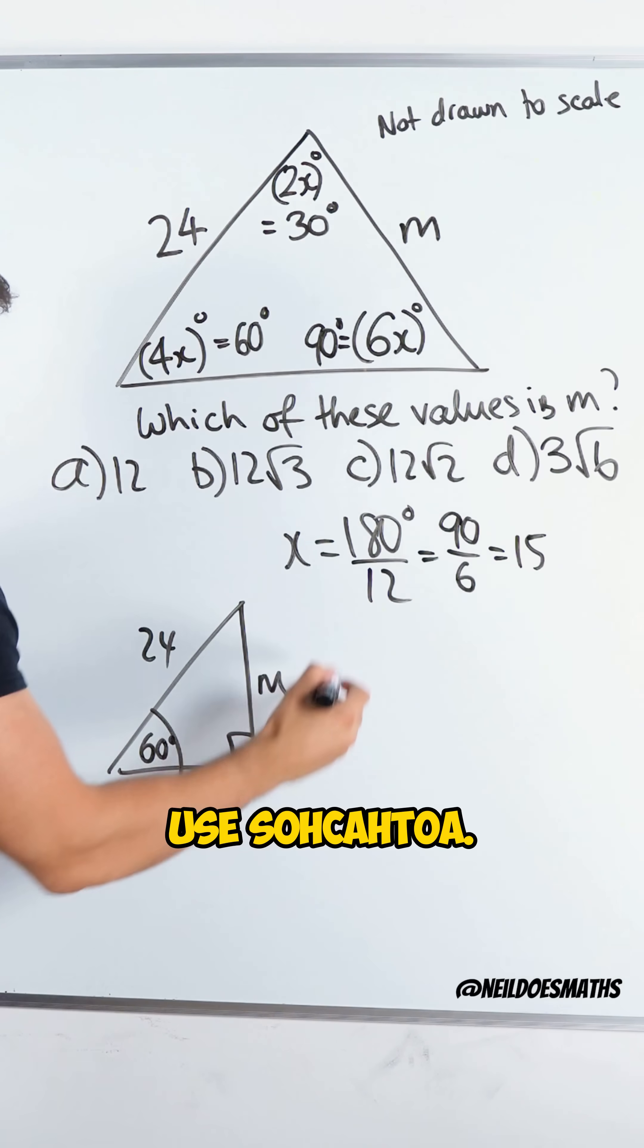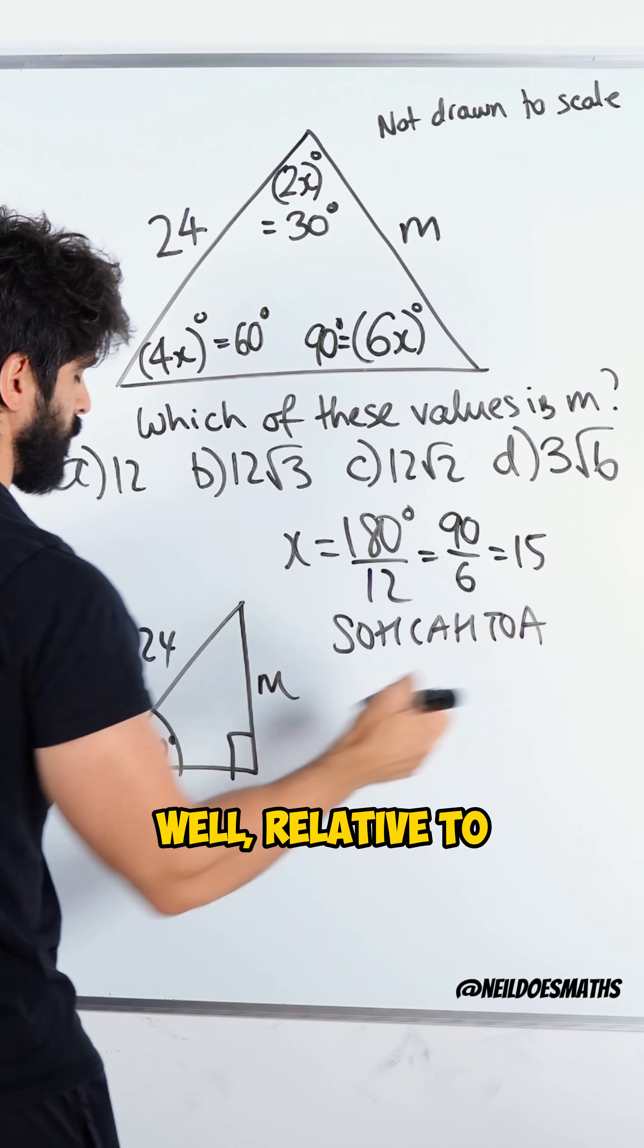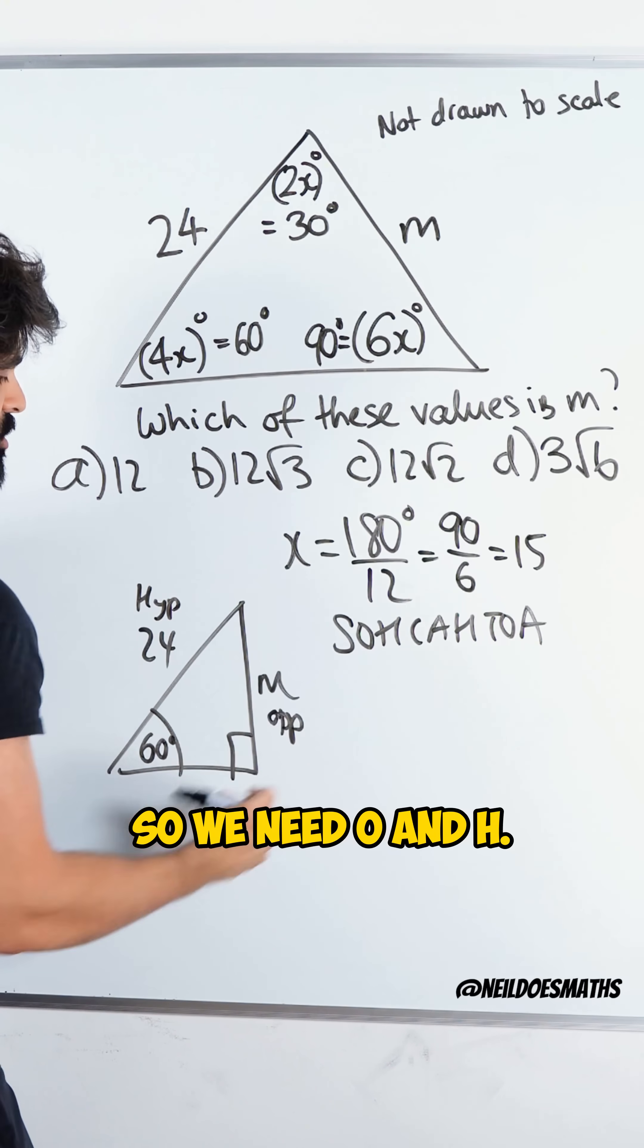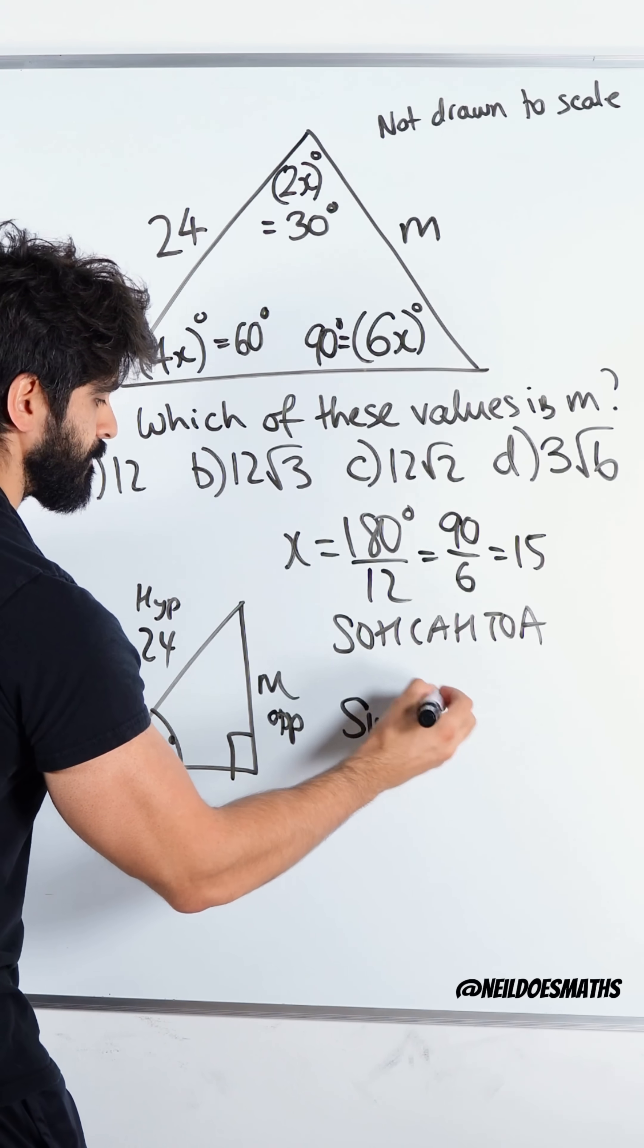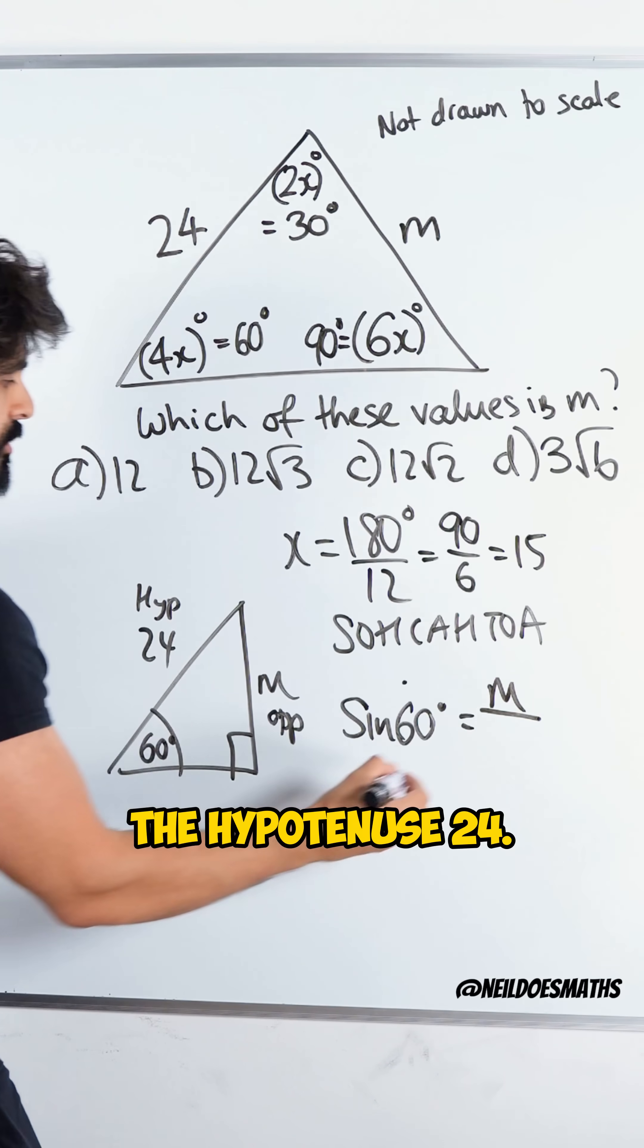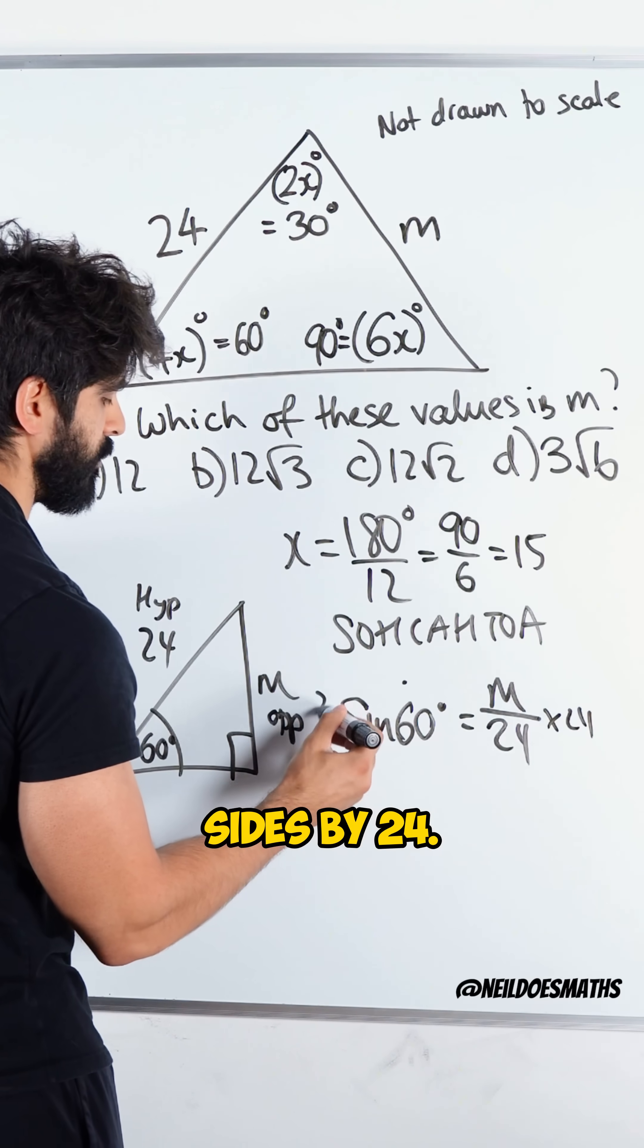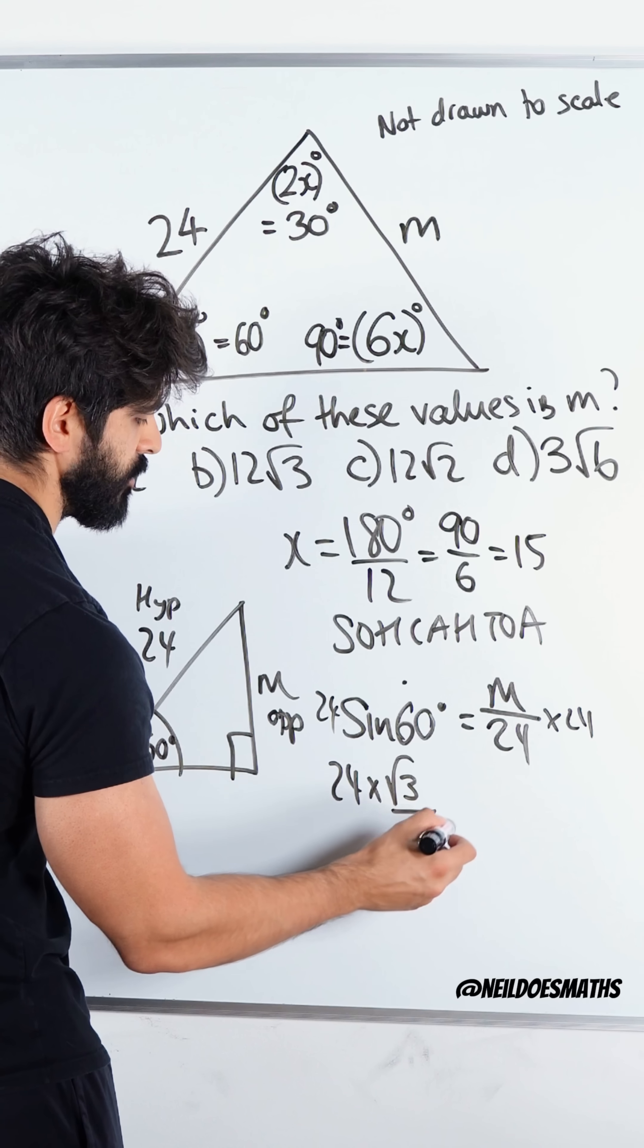But to find m we're just going to use SOHCAHTOA. Which one of these are we going to use? Well relative to this angle this is the opposite and this is the hypotenuse. So we need o and h, so sine. So we're going to say sine of 60 is the opposite m divided by the hypotenuse 24. We're going to multiply both sides by 24. Now sine of 60 is root 3 over 2. 2 goes into 24 twelve times.